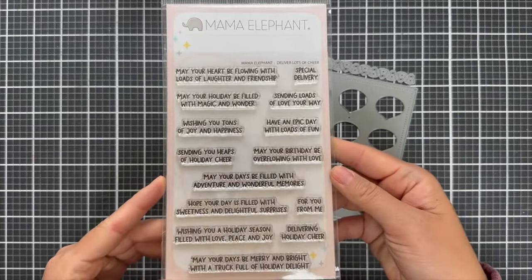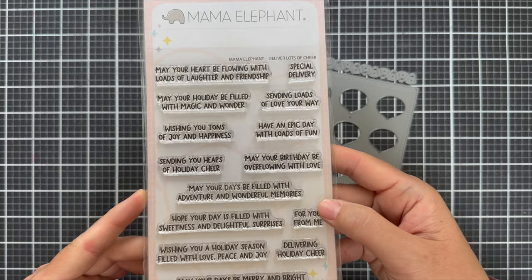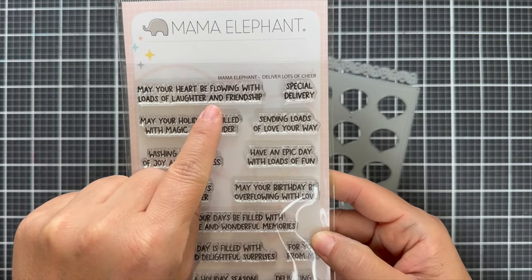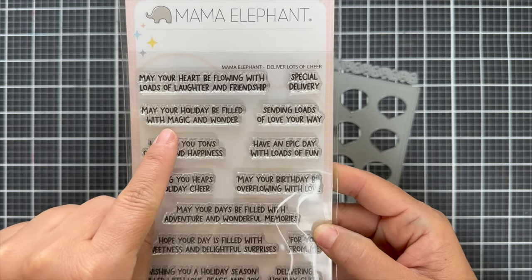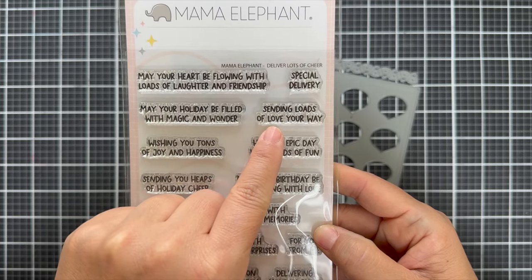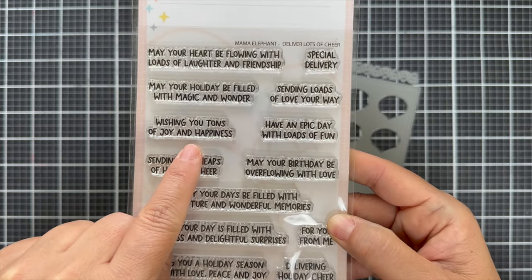First up is the sentiment stamp set. It's called Deliver Lots of Cheer. I'll walk you through all of these sentiments. May your heart be flowing with loads of laughter and friendship, special delivery. May your holiday be filled with magic and wonder, sending loads of love your way, wishing you tons of joy and happiness.